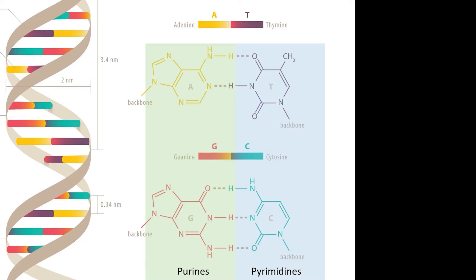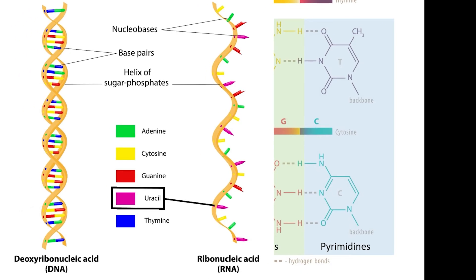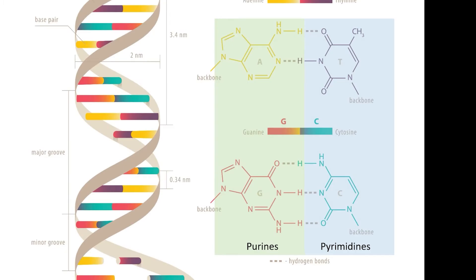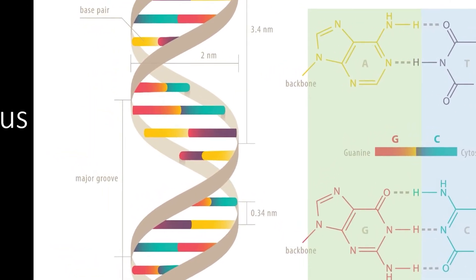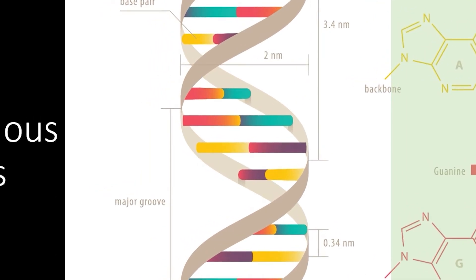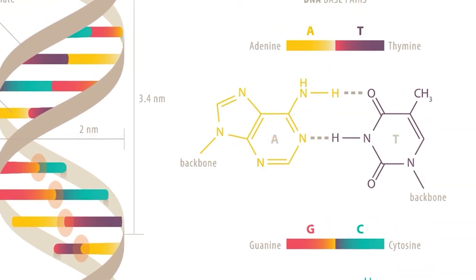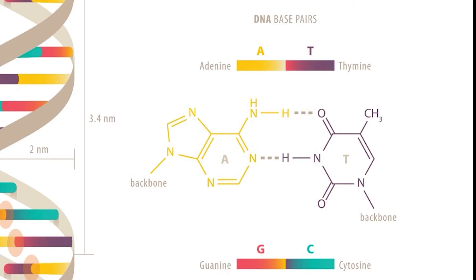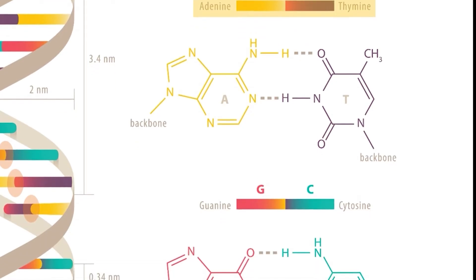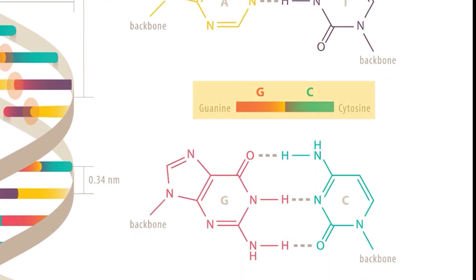Adenine, guanine, thymine, and cytosine are used to create DNA molecules. Uracil is used in RNA in place of thymine, partly because RNA is a single-stranded molecule. More importantly, the nitrogenous bases create the double helix structure of DNA through their ability to form hydrogen bonds — this is what holds the two strands together. You can remember which bases pair using a simple mnemonic: the tall letters A and T pair together, and the fat letters C and G pair together.